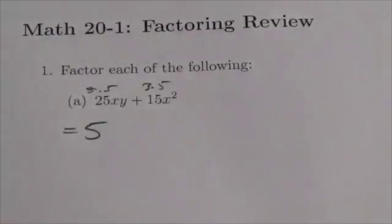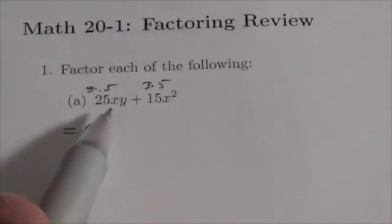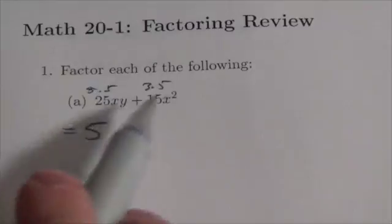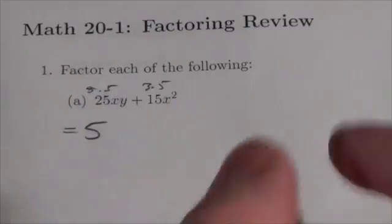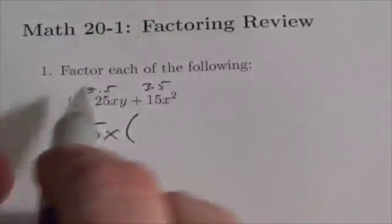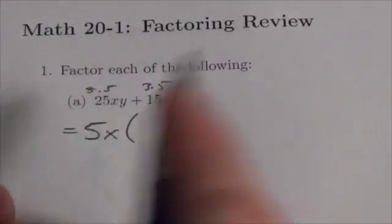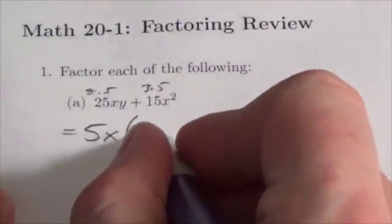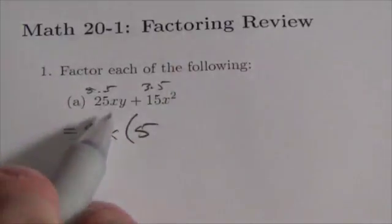I also see that in terms of the variables, there's an x times a y here, and here there's an x times an x. There's a common factor of x there. And when I remove the common factor of 5 from 25, I am left with 5 left over. If I take out the x, I'm left with a y there.